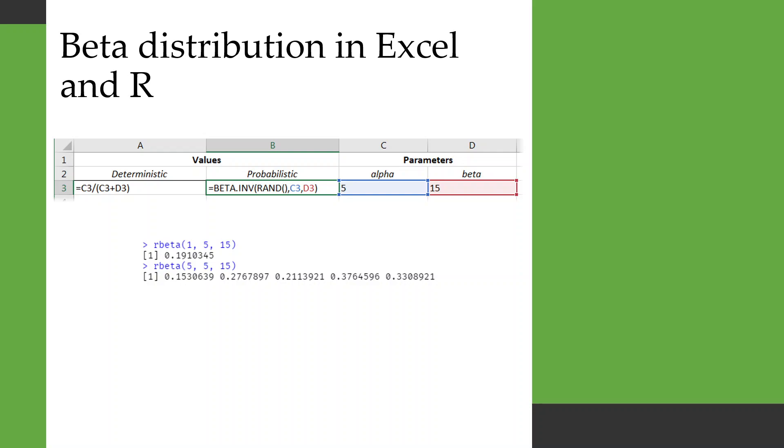And just to show you how you implement it in Excel and in R. Here it is in Excel, so we've got our two parameters here, alpha and beta. As I said, in the deterministic you just want the mean of this distribution, so that's alpha divided by alpha plus beta.